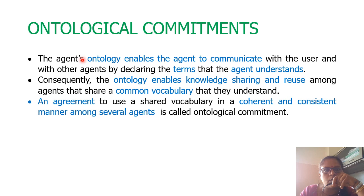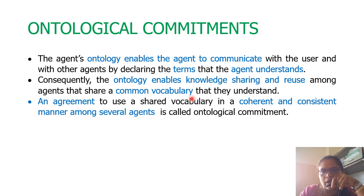The ontology enables the agent to communicate by declaring the terms that the agent can understand. Once there is understanding, it enables knowledge sharing and also the reuse of knowledge among agents. This is made possible by sharing a common set of vocabulary which the agents can understand.